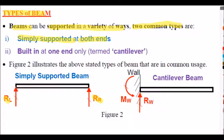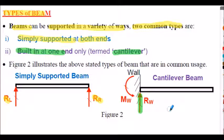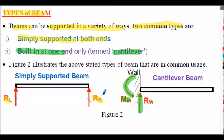The second type is the built-in one-end beam — a cantilever beam. That's slightly different because it only has one vertical support at the wall. To balance that beam, you also need a moment at the wall. So the cantilever has one vertical reaction and one moment reaction at the wall, whereas a simply supported beam has two simple supports along its length. I'm primarily going to look at simply supported beams.